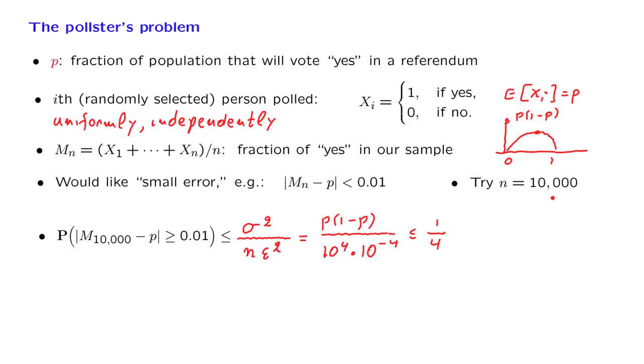So you tell your boss, if I sample 10,000 people, then the probability of an error more than the 1 percentage point is going to be less than 25%. At which point, your boss might reply and say, well, a probability of a large error of 25% is too big, this is unacceptable.